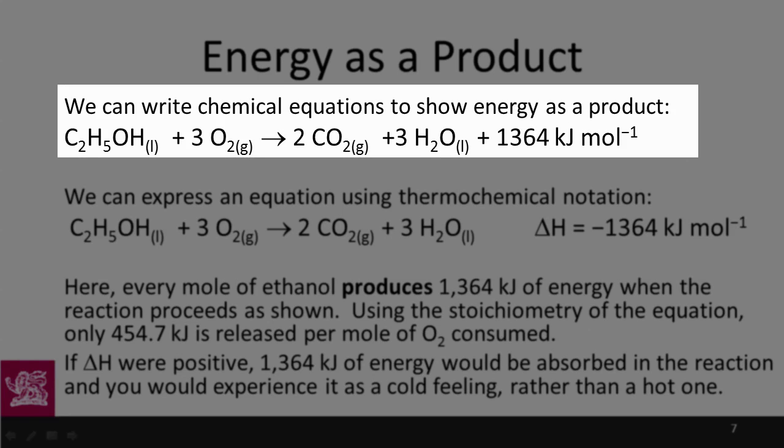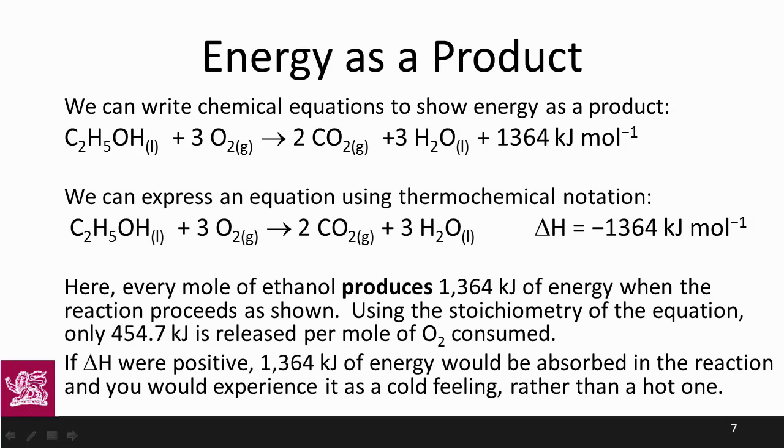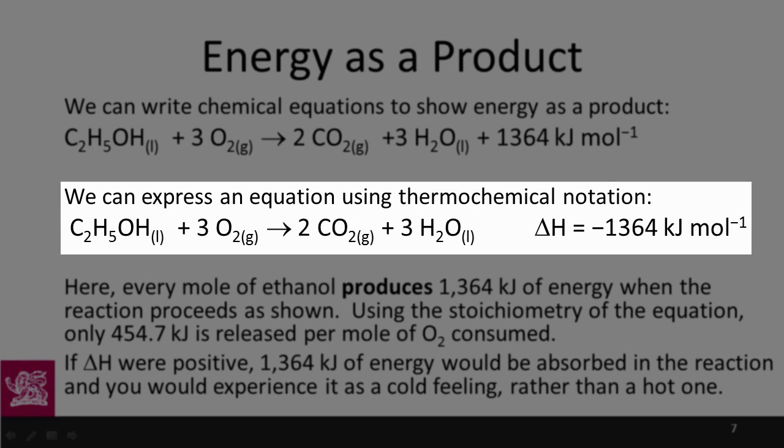We can write chemical equations to show energy as a reactant or a product. And here, this is an exothermic reaction, so the energy is part of the products. We can also express this type of reaction using the thermochemical notation, which is to say, we write out the chemical reaction as we understand it, and then we have a delta H value. And that delta H value, if it's an exothermic reaction, will be a negative number. And if it's an endothermic reaction, it will be a positive number. We always write the delta H after the reaction.